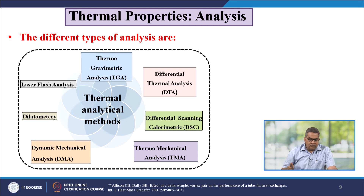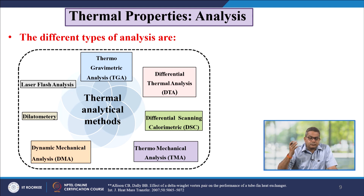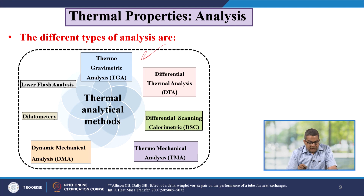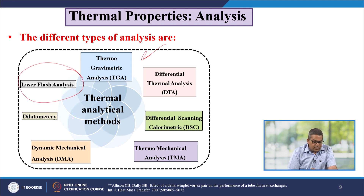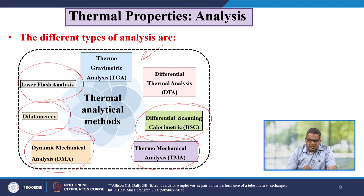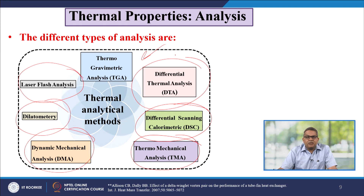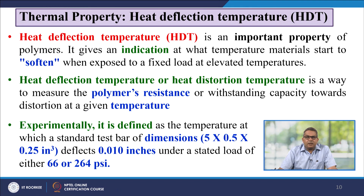Here you see the different types of analysis which are quite essential for the evaluation of any polymer: thermal gravimetric analysis, laser flash analysis, dilatometry, dynamic mechanical analysis, thermomechanical analysis, DSC or differential scanning calorimetry, and DTA or differential thermal analysis. All these are the thermal analytical methods.